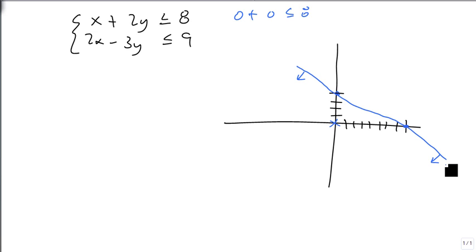But we can't shade yet, because this is just one of our lines. Our second line is best solved for. And notice I'm treating it as an equal sign just because I need the line, not the shading yet. So we're going to start at minus 3 and we're going to go up 2 and over 3, and then up 2 and over 3 again.